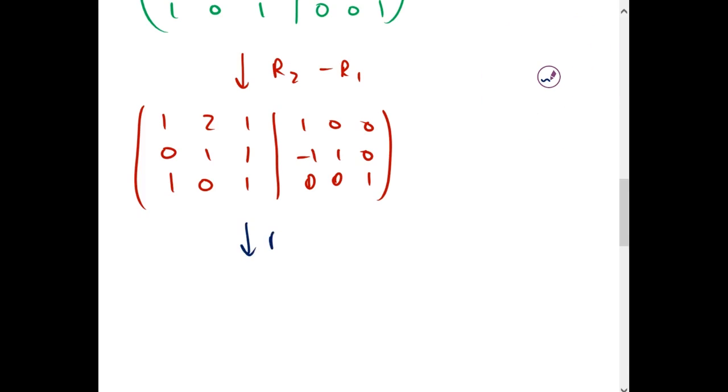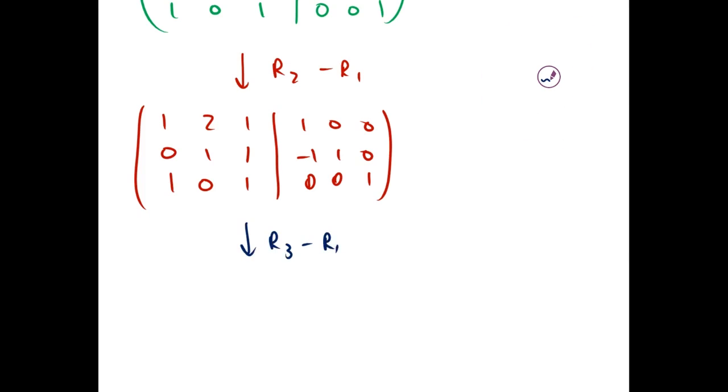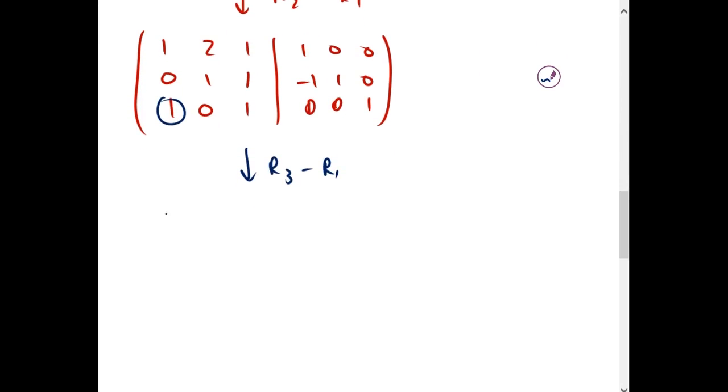Then we take R3 minus R1 so we can get a zero here. That gives us 0, negative 2, 0, negative 1, 0, 1.